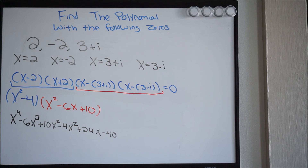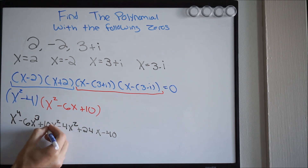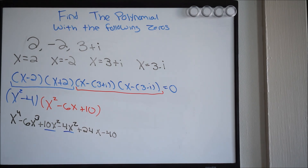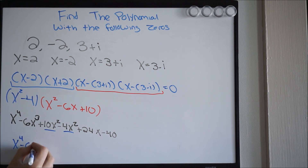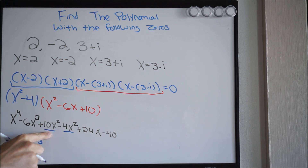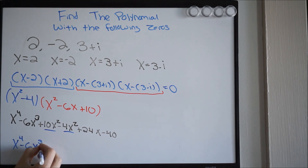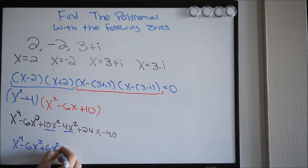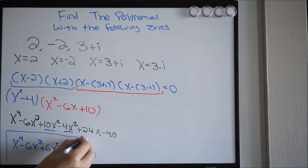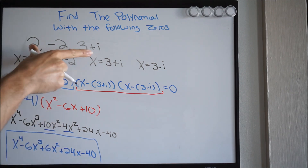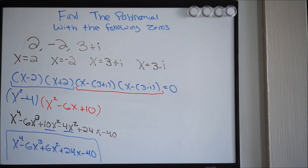Now combine like terms. We have 10x squared minus 4x squared which gives plus 6x squared. So the final answer is x to the 4th minus 6x cubed plus 6x squared plus 24x minus 40. This is the polynomial with those given zeros. We were given the zeros and we were able to find the polynomial with those given zeros.